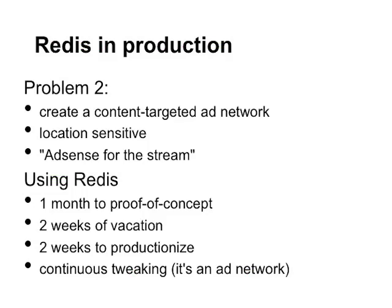In one month we built a proof of concept. Then I took a two-week vacation, came back and productionized it in another two weeks. We spent time continuously tweaking because it's an ad network. It was serving ads returning content, location, and categorized targeting — we had a deadline of under 200 milliseconds, and we were consistently doing better than 100 milliseconds. That included everything from parsing the tweets, performing the query, targeting the ads, and doing all the learning stuff.